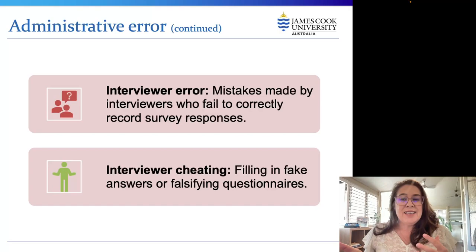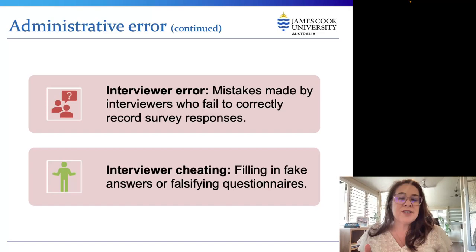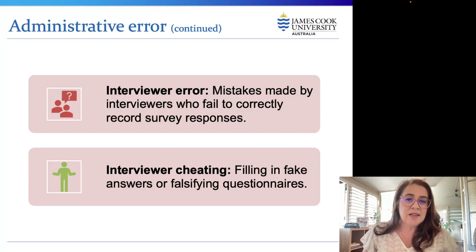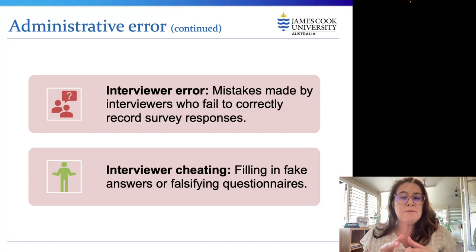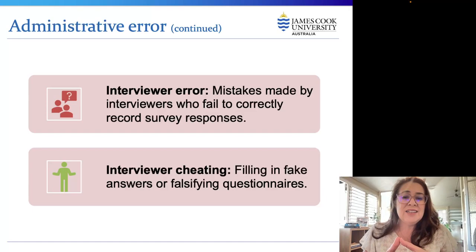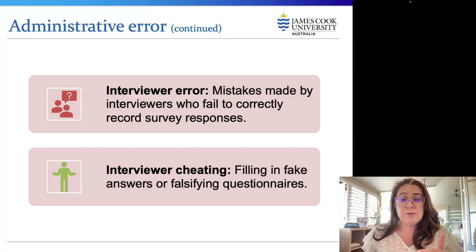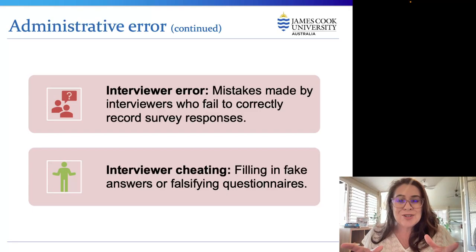Sampling error may be estimated using statistical tools, but ways to estimate systematic error are less precise. Many researchers find it useful to use a standard of comparison — for example, a TV network knocks down the number of people saying they intend to purchase a service by about 10% because previous experience indicated a 10% upward bias in intention questions. Chapters 8, 9, and 10 discuss measurement, questionnaire design, and reduction of sample selection and random sampling error.